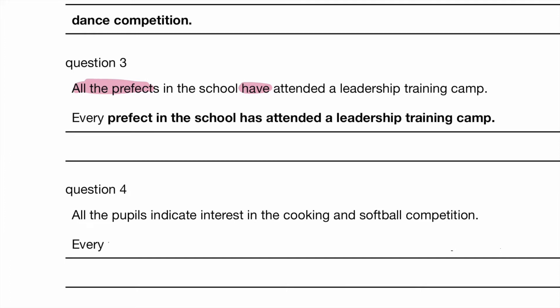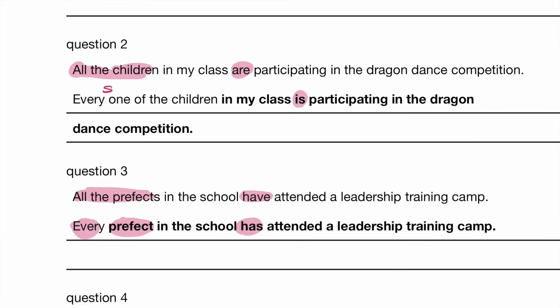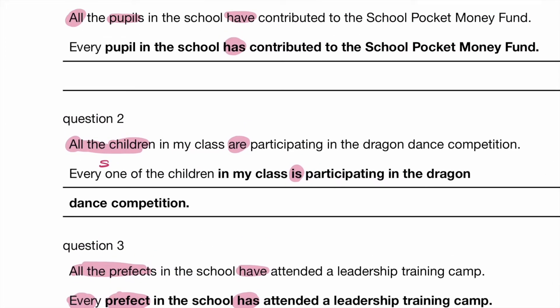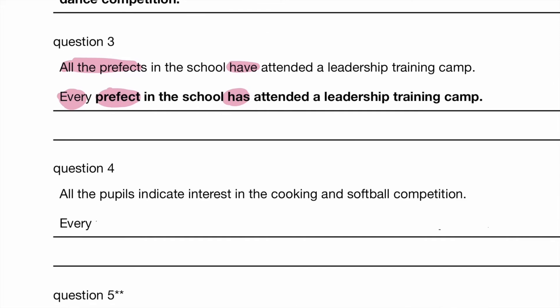Points to take note: 'has' is singular because 'every' is singular. We cannot use 'every prefects' with S — we have to say 'every prefect.' Notice: every one of the, every pupil (not every pupils), every prefect (not every prefects). Make sure to use the singular form without S after 'every.'